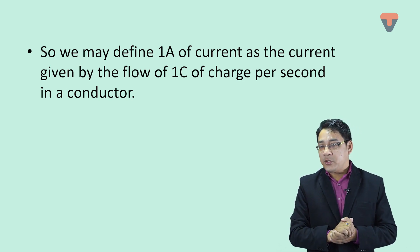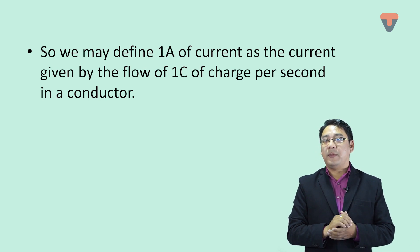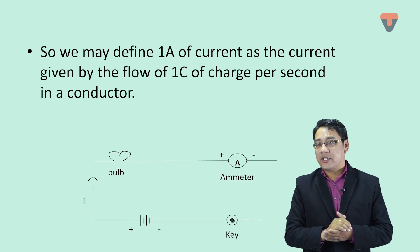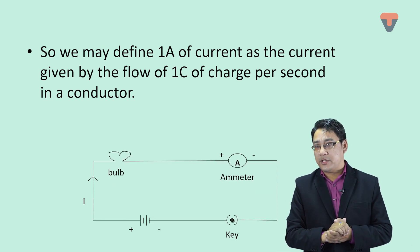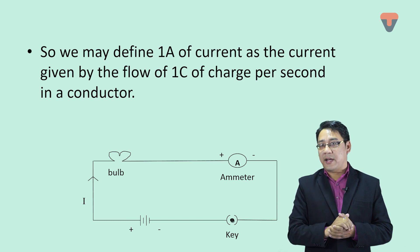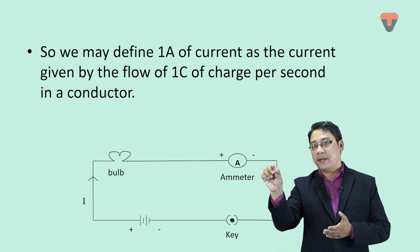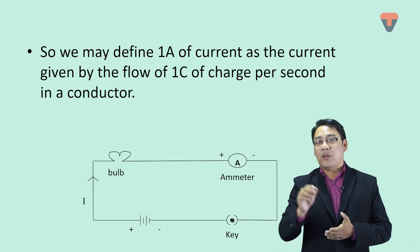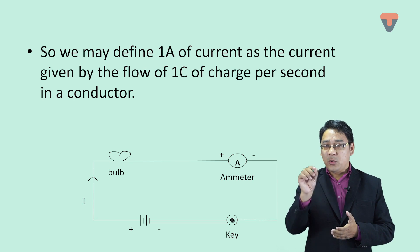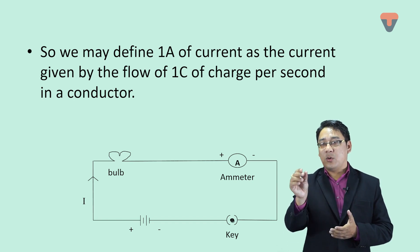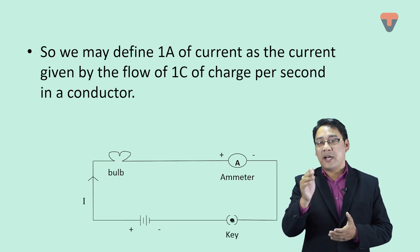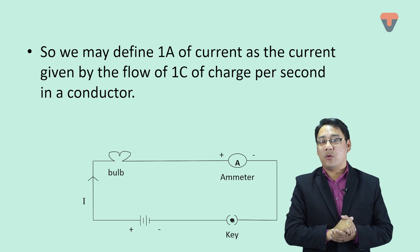Looking at an electric circuit diagram, the ammeter is connected in series. The key when closed completes the circuit, and when open breaks the circuit.